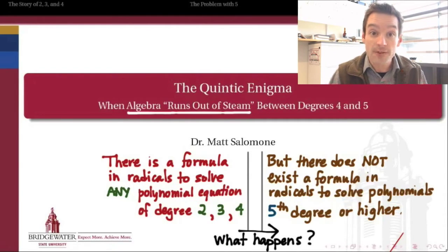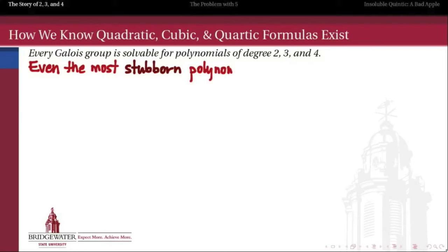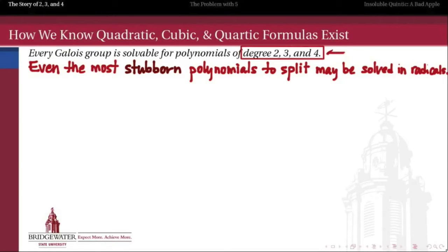In the course of the next couple of videos, we want to figure out what that is. We know that every Galois group of a polynomial of degree two, three, or four is going to be a solvable group, and therefore those polynomials must be solvable in radicals. Even the most stubborn polynomials — the ones that take the most work to build their splitting field — can still be solved in radicals in degree two, three, and four, because their Galois group is going to be a solvable group.